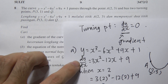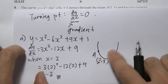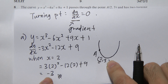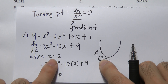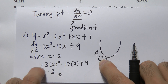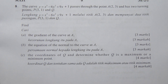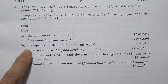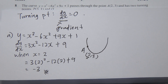That's all for Part A — you differentiate to get the gradient function, substitute the x-coordinate of point A, and solve to get -3. Now for Part B, he wants the equation of the normal to the curve at A.